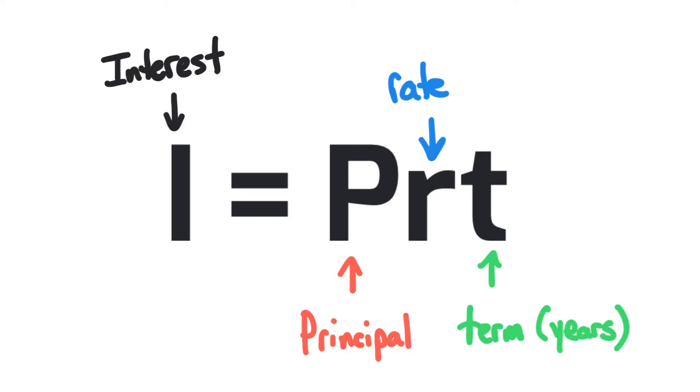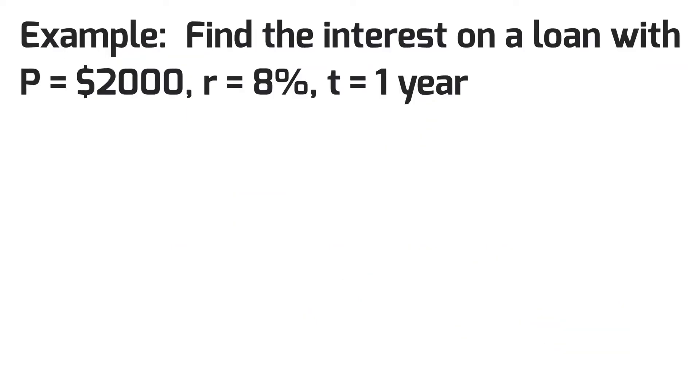Write those down—don't lose them, they're going to help you out a lot. If we look at this question, I've given you an example. I'm asking you to find the interest, or the simple interest, on a loan with P equals $2000, R is 8%, and T is 1 year. Very quickly, we know that we have a few things here: we have the principal, we have the rate, and we have the time. I know because of those three variables that we're going to use our simple interest formula.